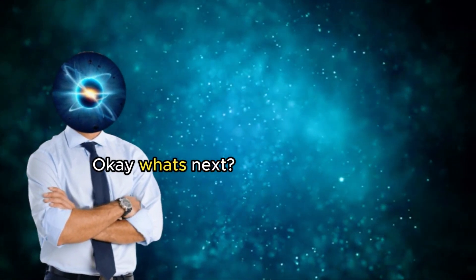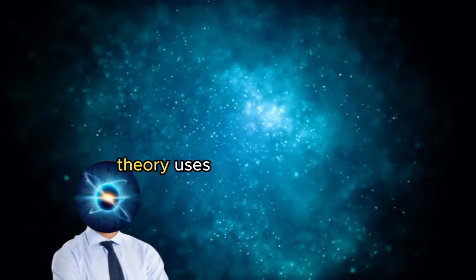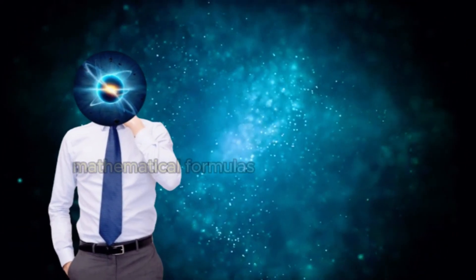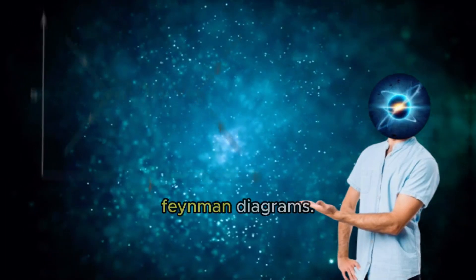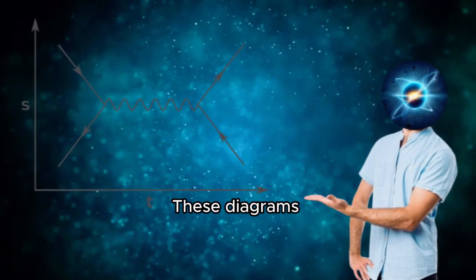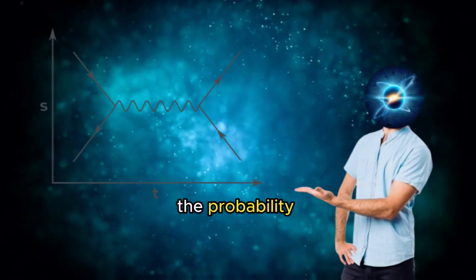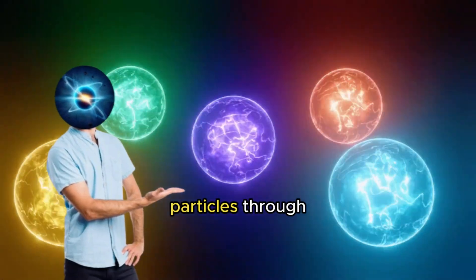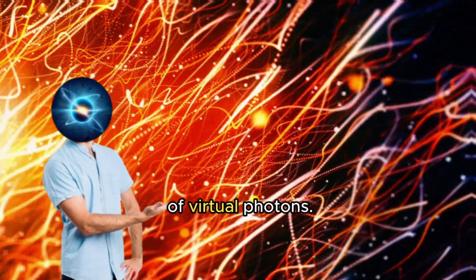Thanks Albert. Okay, what next? Oh right. The theory uses mathematical formulas and calculations based on Feynman diagrams. These diagrams visualize and calculate the probability of interactions between charged particles through the exchange of virtual photons.